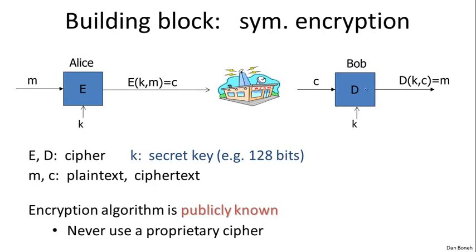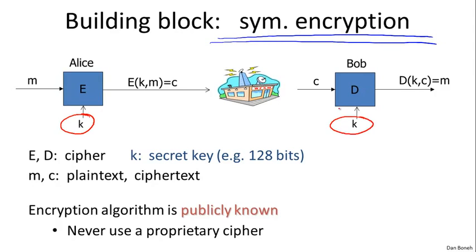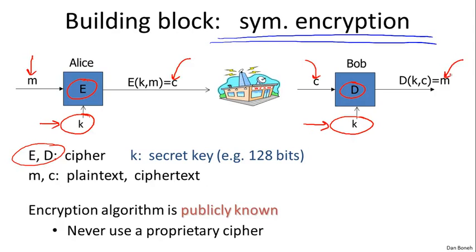The building block for securing traffic is what's called symmetric encryption systems, and we're going to talk extensively about these in the first half of the course. In a symmetric encryption system, the two parties Alice and Bob share a secret key K, which the attacker does not know. They're going to use a cipher consisting of two algorithms, E and D. E is called the encryption algorithm and D is called the decryption algorithm. The encryption algorithm takes the message and the key as input and produces a corresponding ciphertext, and the decryption algorithm does the opposite — it takes the ciphertext and the key as input and produces the corresponding message.